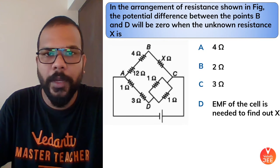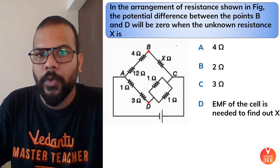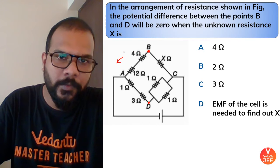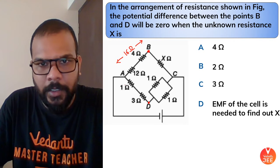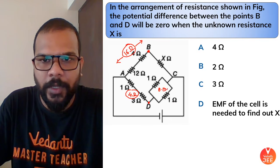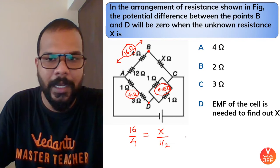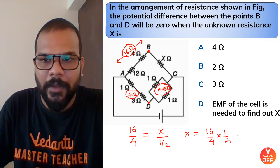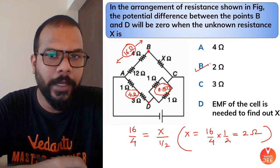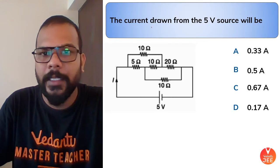Next: find unknown resistance X such that potential difference between B and D is zero. From A to B: 12 + 4 = 16 ohms. From A to D: 4 ohms. From C to D: two 1-ohm resistors in parallel = 0.5 ohms. Applying balance condition: 16/4 = X/0.5, so X = 4 × 0.5 = 2 ohms.